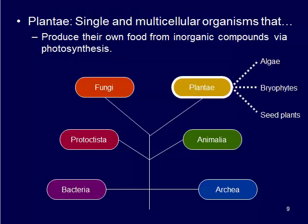Plants — the plants that are around you, like algae, seeded plants, trees, and grass — are single and multicellular organisms. They produce their own food from inorganic compounds through photosynthesis, using the sun to help them live, survive, and produce their own food.